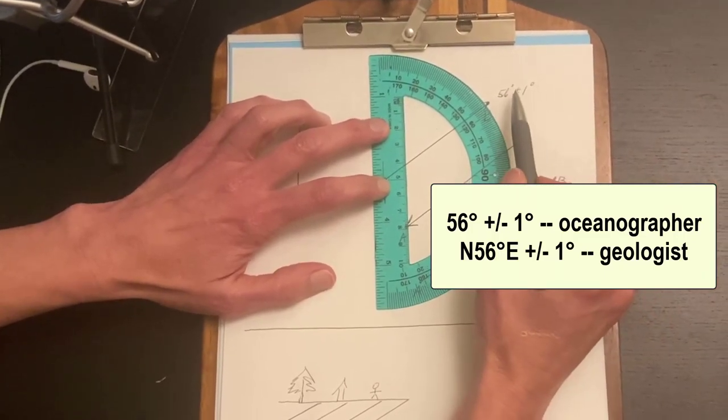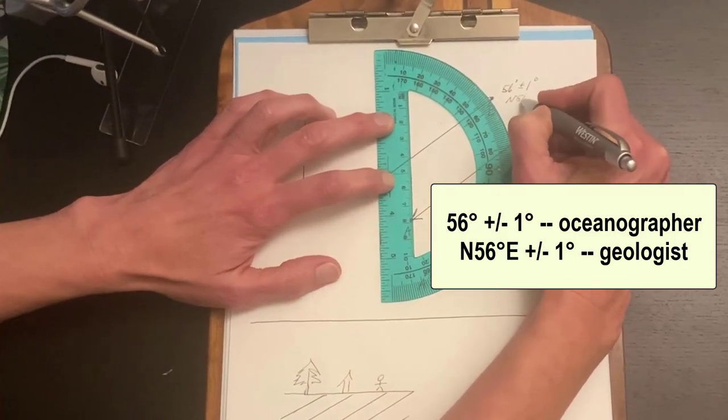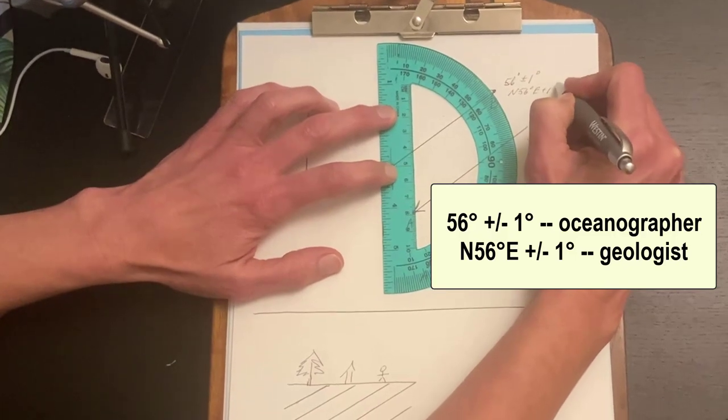That is the oceanographer's method. A geologist would write that as north 56 degrees east plus or minus one degree.